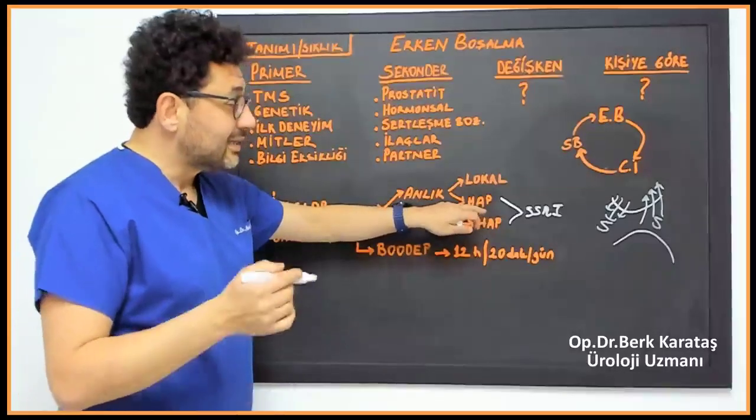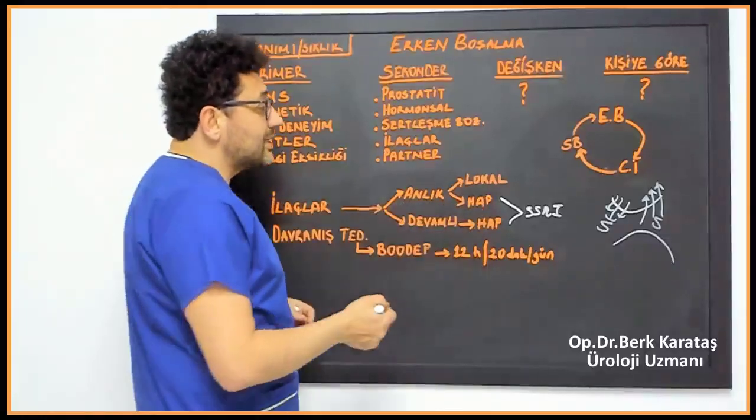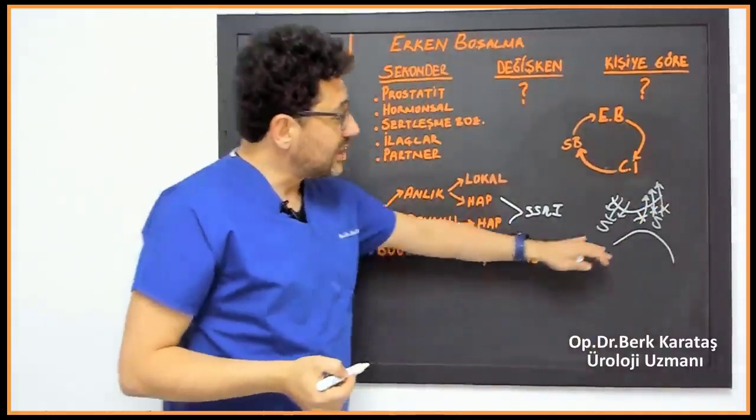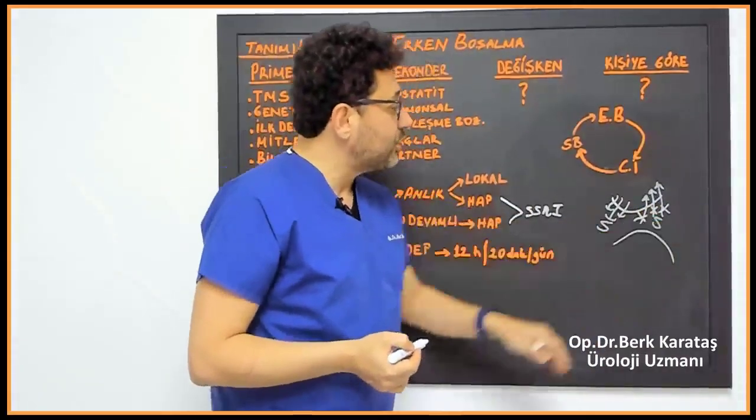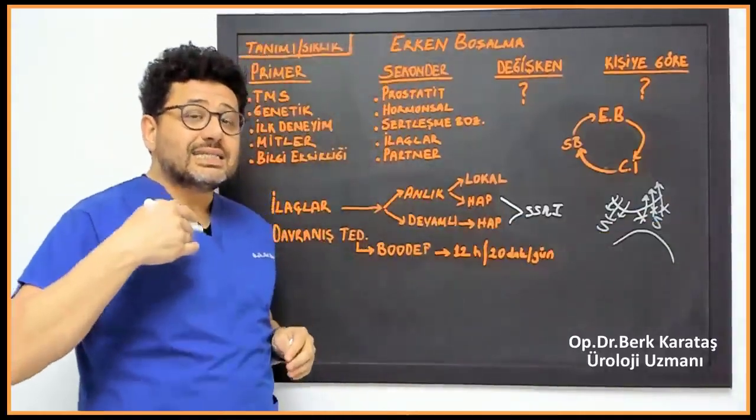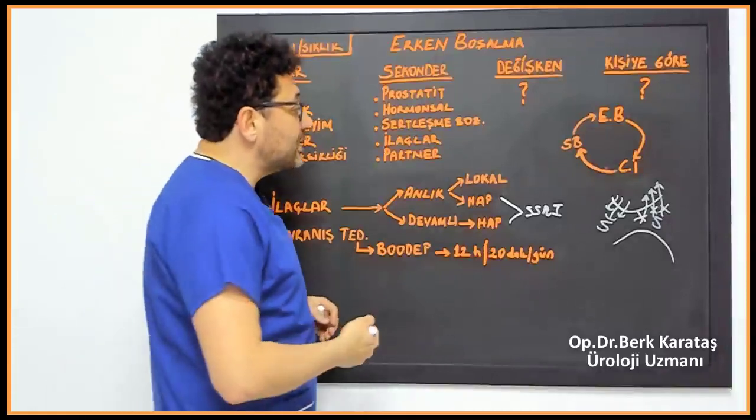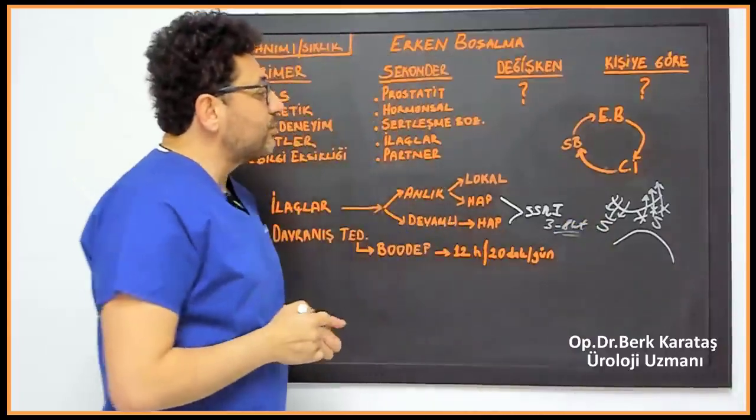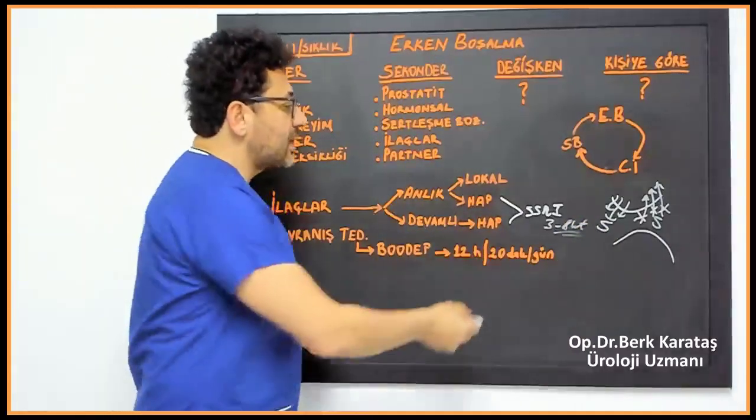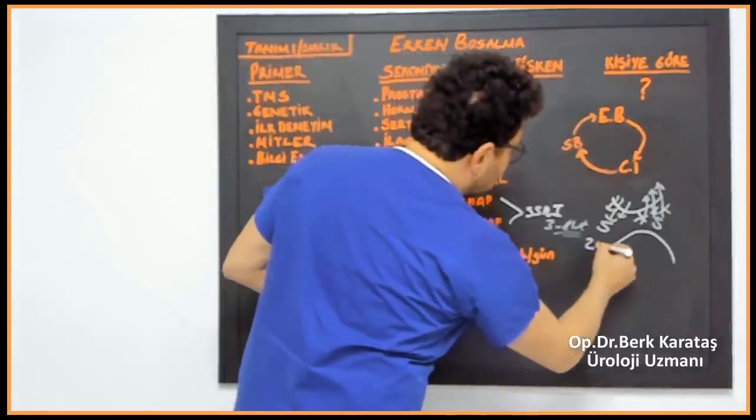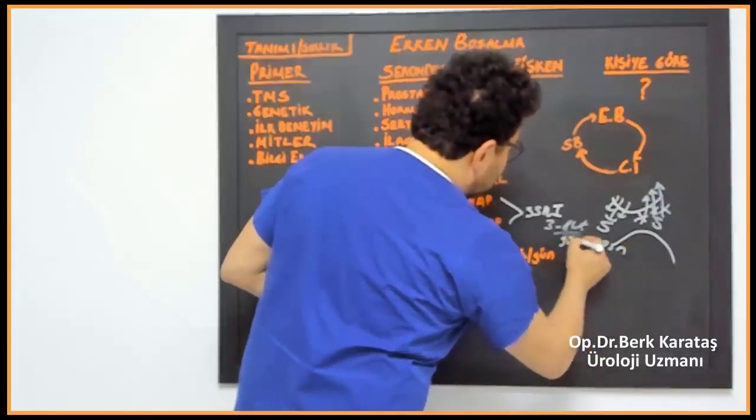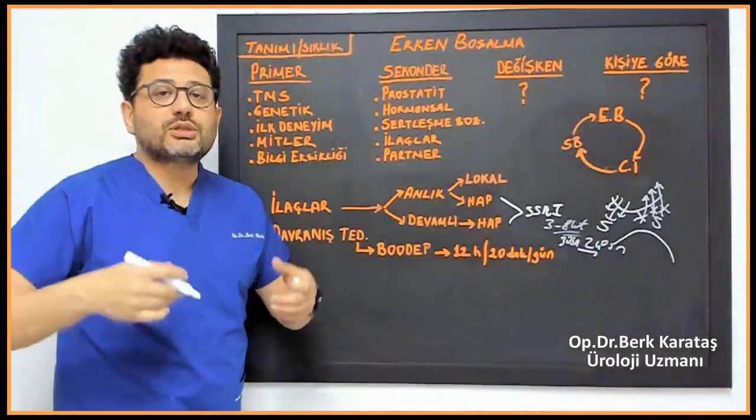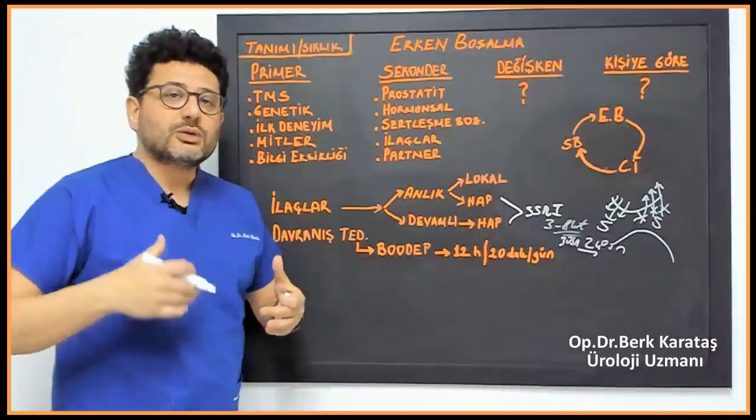The following medicines, either used instantaneously before intercourse or used continuously, prevent this. When it prevents the reuptake of serotonin, this serotonin accumulates in this area and prevents or delays the feeling of ejaculation. How long does it delay? It delays by 3 to 8 times. If a person ejaculates in 30 seconds in his normal life, he ejaculates after a maximum of 240 seconds by using this medicine. But when the feeling of ejaculation comes, the person ejaculates. Because he doesn't know how to supervise, he doesn't know the stop and start technique.